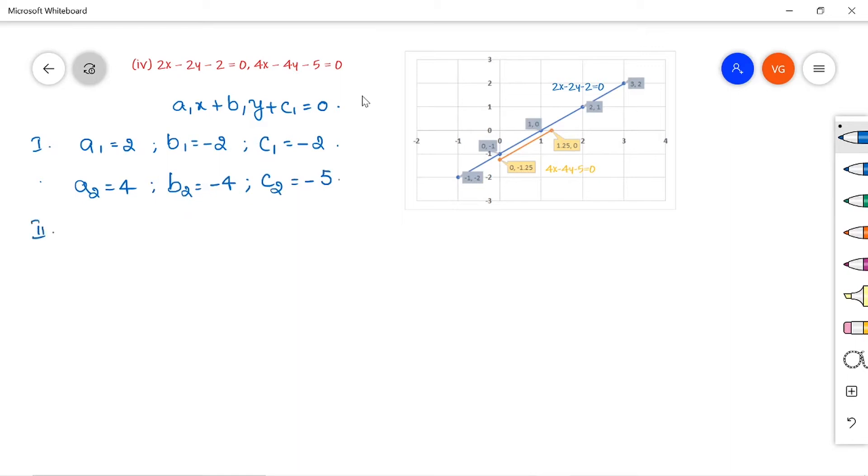Now we will write the ratios: a1 by a2 equals 2 by 4, that is 1 by 2. b1 by b2 is minus 2 divided by minus 4, which is 1 by 2. c1 by c2 is minus 2 by minus 5, which can be written as 2 by 5.